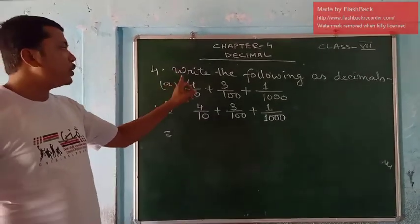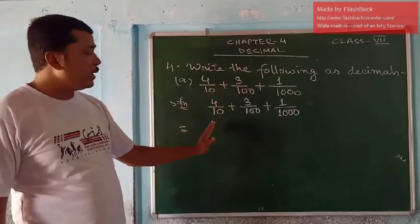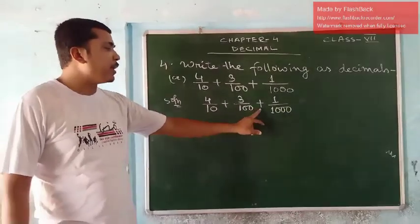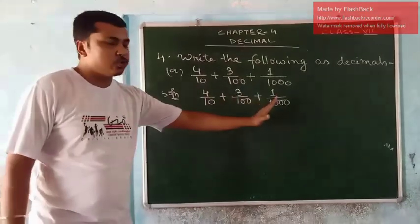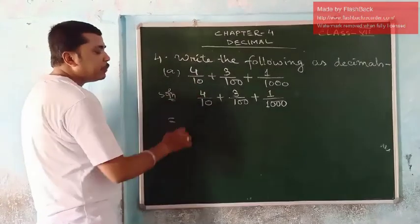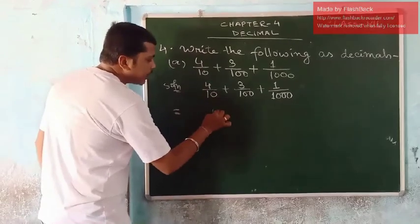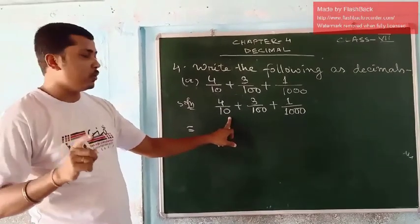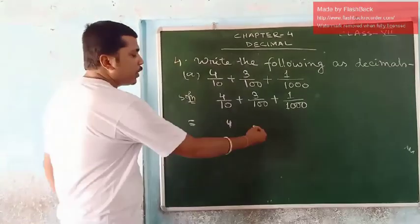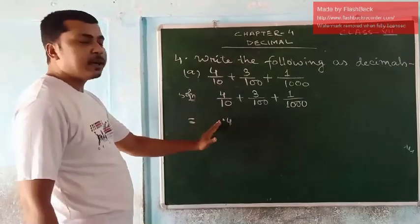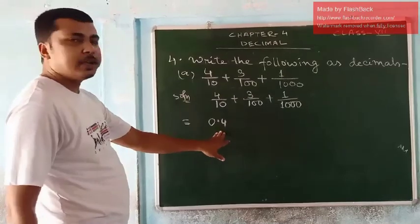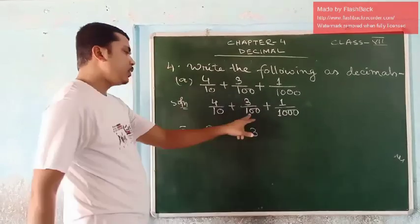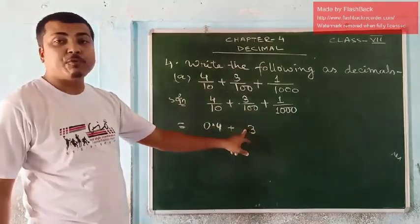In question number 4, write the following as decimals. The question is 4/10 + 3/100 + 1/1000. Take 4/10 first — forget the other two. The denominator has one zero, so place the decimal before one digit counting from right. If nothing is before the decimal, add a zero. Now for 3/100: the denominator has two zeros, so place the decimal before two digits. Since you have only one digit, add one zero more. Count from right — one, two — and place the decimal before two digits, then add a zero before decimal.